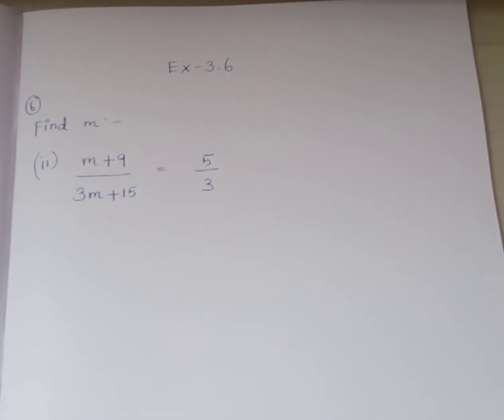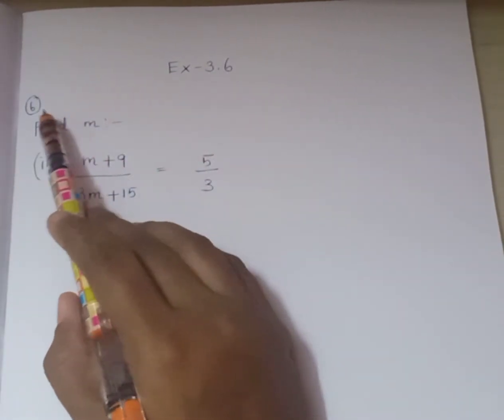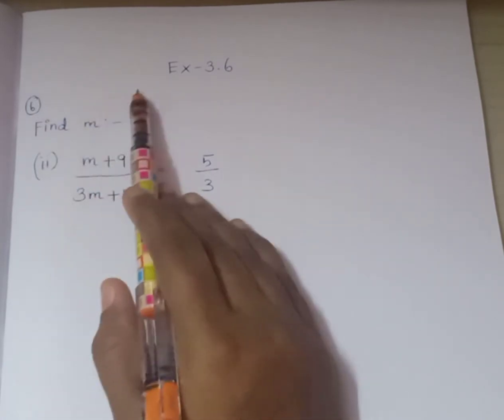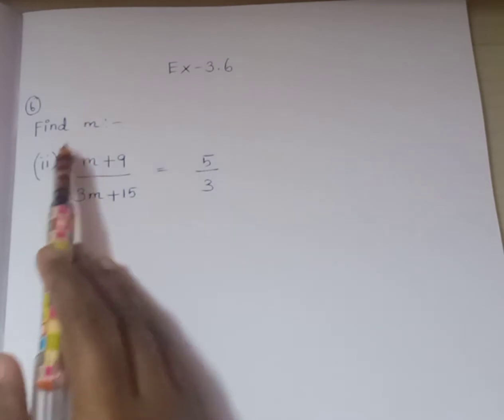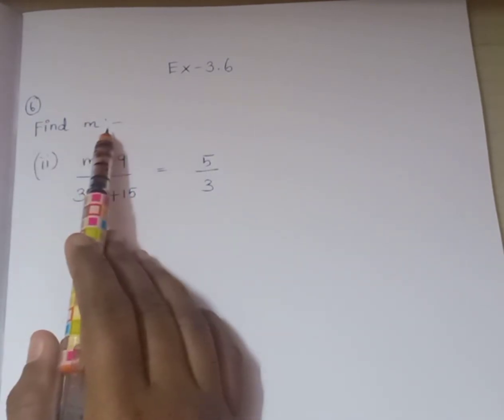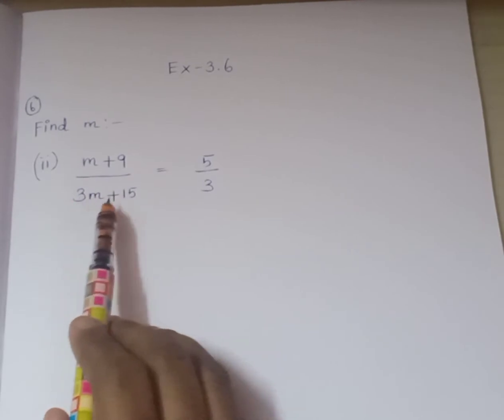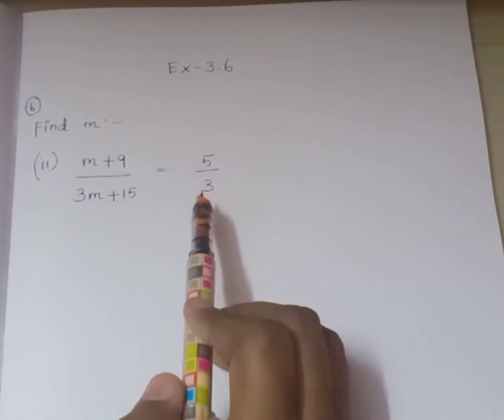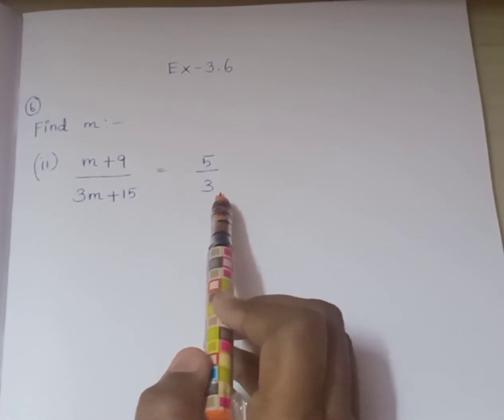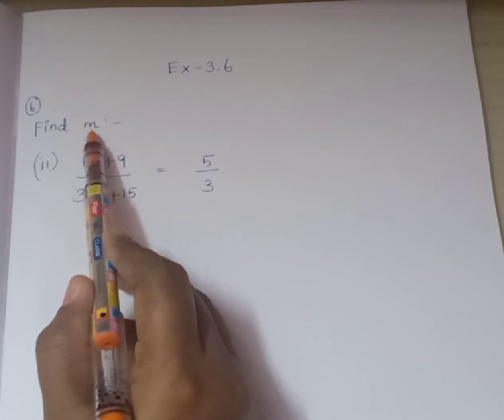Hi student, today we are going to see problem number 6, second option from exercise 3.6. The question is find m, where (m+9)/(3m+15) = 5/3. So from the given equation, we are going to find the value of m.